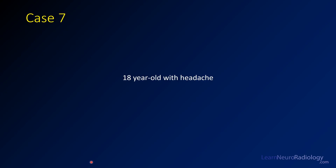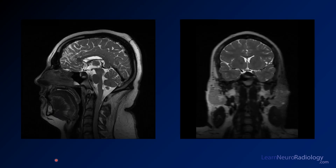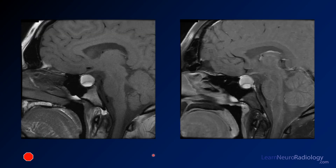For case 7, we have an 18-year-old with a headache. Here we have a sagittal reconstruction of CT through the head. If the abnormality doesn't jump out to you, don't worry too much — we're going to have some additional images. Here are images from an MR: thin slice T2 images reconstructed both sagittally and coronally, as well as pre- and post-contrast images.